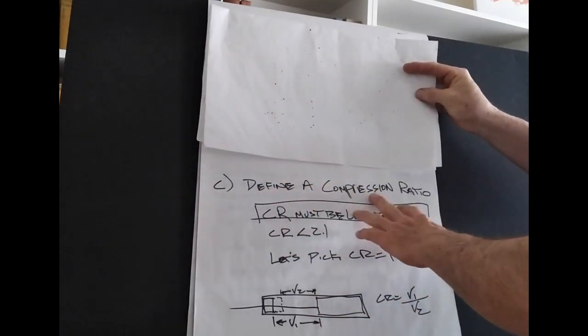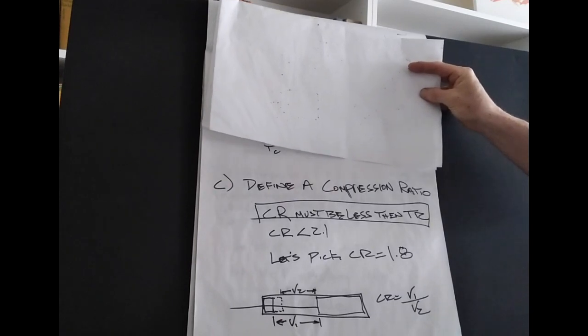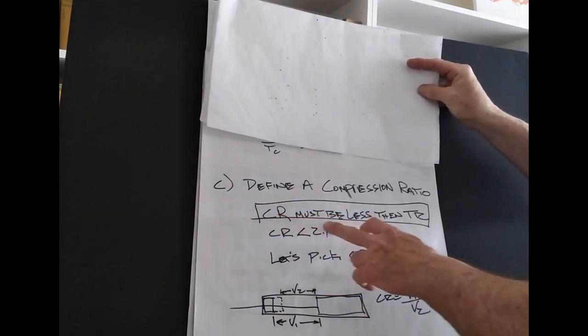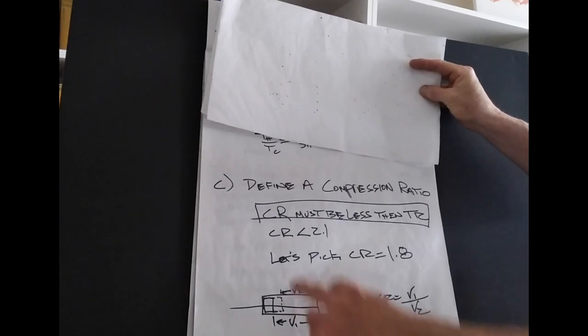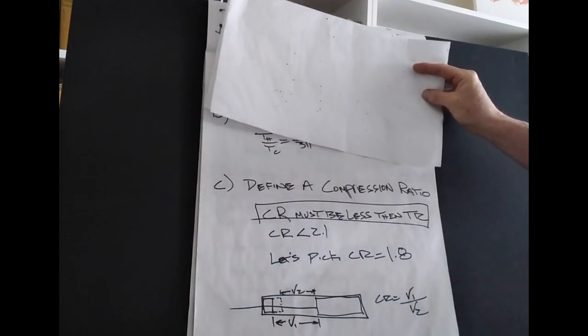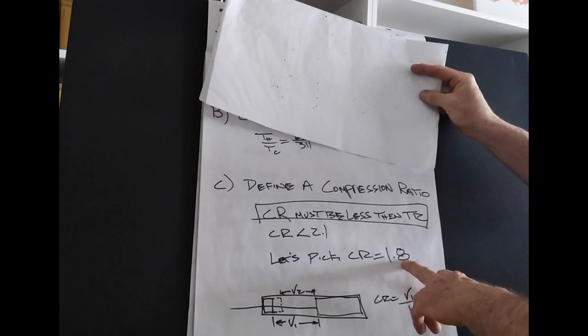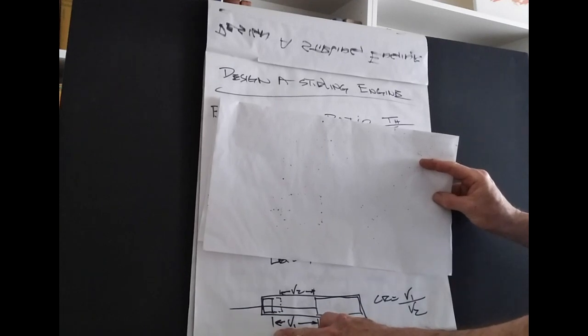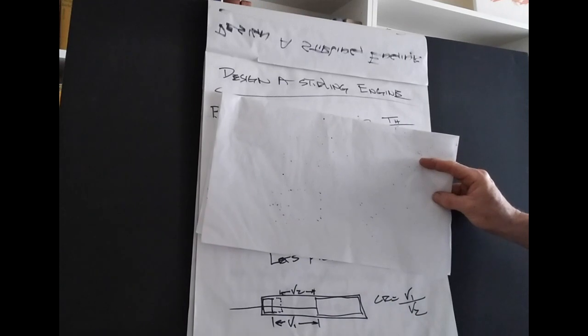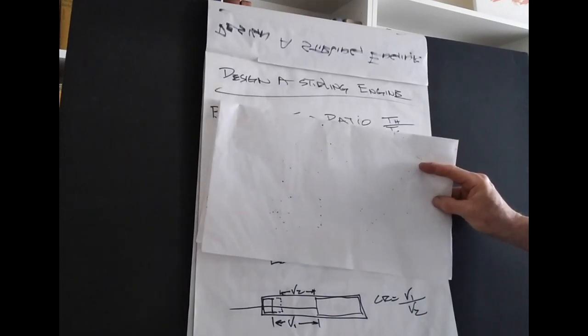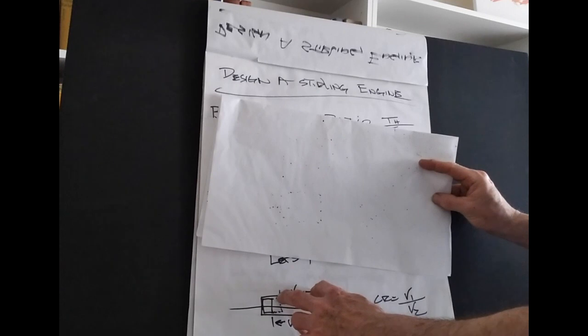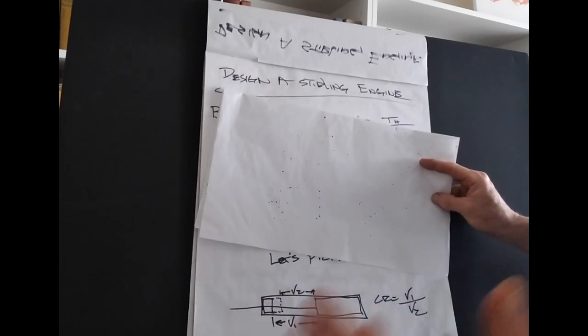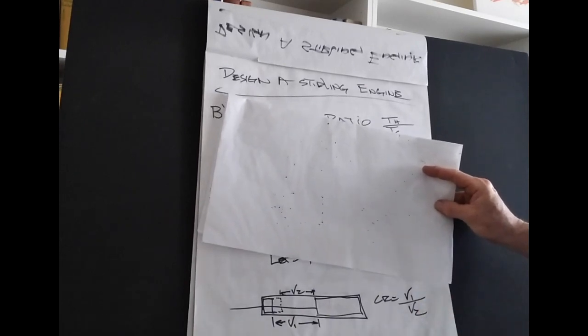Now, we want to define a compression ratio. Now, a sterling engine, if you want the sterling engine to run, compression ratio must be less than the temperature ratio. So our compression ratio must be less than 2.1. We're going to pick one to be 1.8. And what is the compression ratio? The compression ratio is just basically the working volume of your working fluid, air in this case, let's say, versus the compressed volume of that working fluid. So V1 over V2.